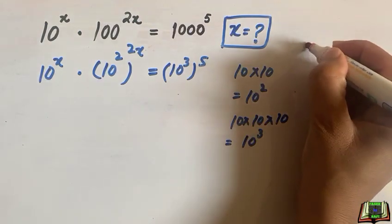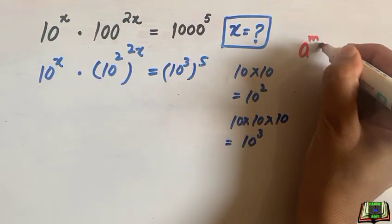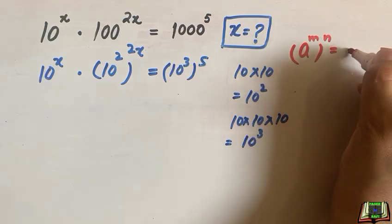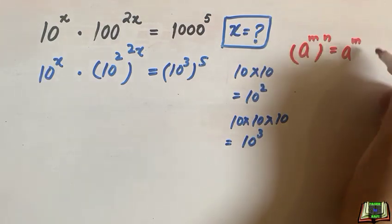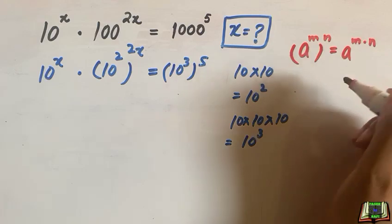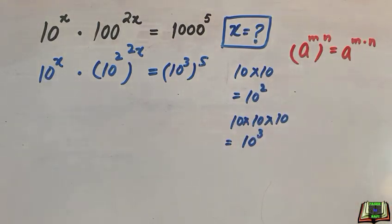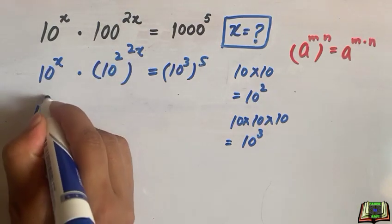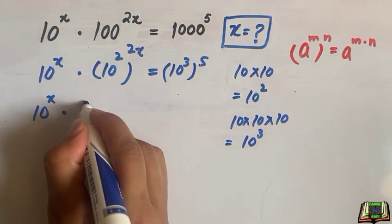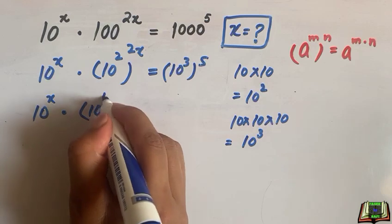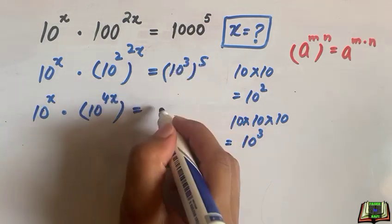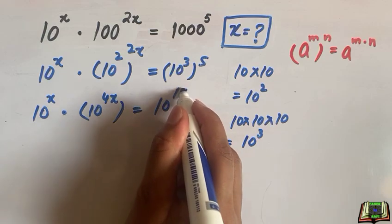Here we are going to use power of a power rule that says if a to the power m to the power n, then we can multiply the powers like a to the power m times n. So using that rule, we are going to multiply the powers like 2 times 2 is 4. 10 to the power x times 10 to the power 4x is equal to similarly 10 to the power 3 times 5 is 15.